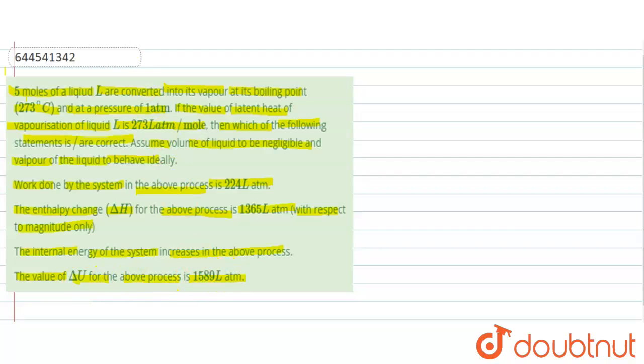So friends, in this question let us check. First, n times Vp will be equal to 5 moles into R into temperature in Kelvin that is 546. So from here, Vt will come out as 224 liters.